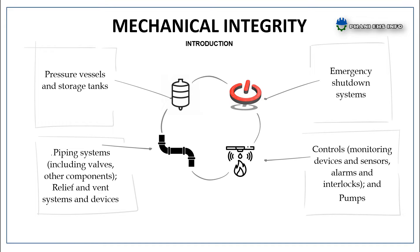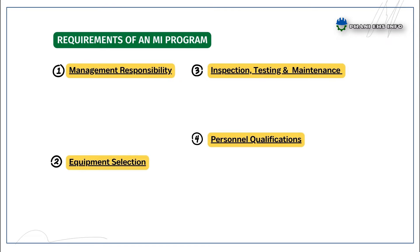And 6. Pumps. The four key phases for an effective Mechanical Integrity Program development include management responsibility, equipment selection and implementation through inspection, testing and application of proactive maintenance strategies. Properly trained and certified personnel conducting these activities are also a key part of an effective mechanical integrity program.